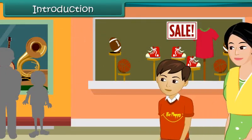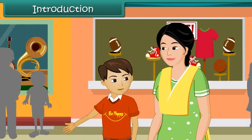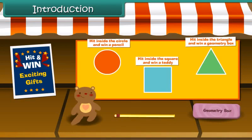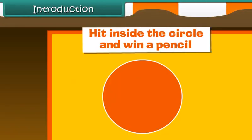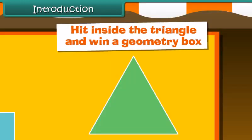Raoul visited a fair with his mother one day. There he notices a game. There were few shapes on a board. At the top of the board, few lines were written. Hit inside the circle and win a pencil. Hit inside the square and win a teddy. Hit inside the triangle and win yourself a geometry box.